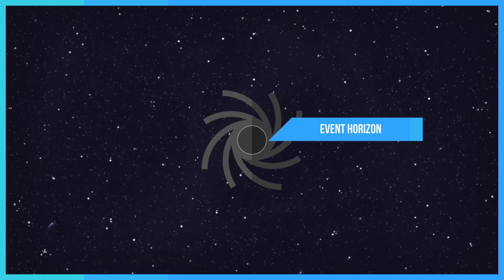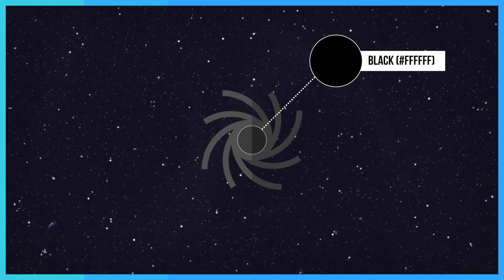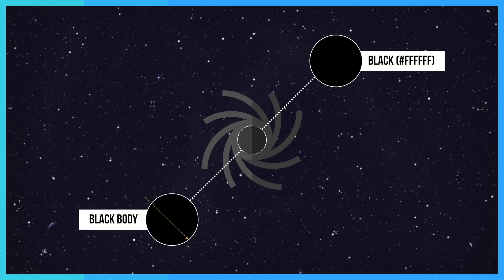Black holes are called black because they absorb all the light that hits it, reflecting nothing. This is known as the perfect black body in thermodynamics.